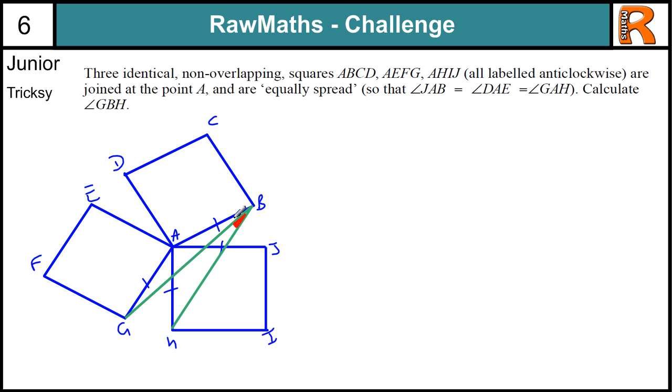Now what we've got here is we've got several isosceles triangles. Let's look at this triangle here, G, A, B. So in that triangle, let's use a purple colour, we've got this set of angles here. Now, as these are all identical squares, and they're equally spread, then we know that these three angles, this angle here, this angle here, and this angle here, are the same. Let's just work that out what that is, because all these angles here are 90 degrees, these are all right angles because they're squares. So if we do three lots of 90, plus three lots of the missing angle X, I'll call that X in there, and that equals 360. So three ninety is 270, so three lots of X is 360 minus 270, which is 90 degrees. So X equals 30 degrees.